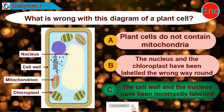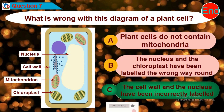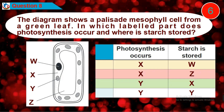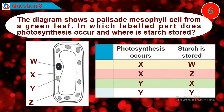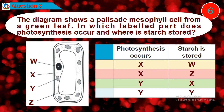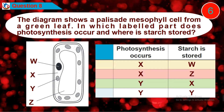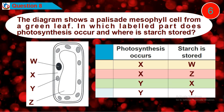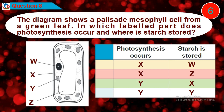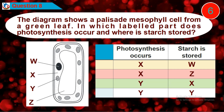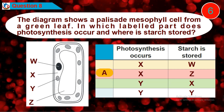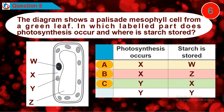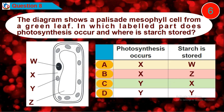Question 8: The diagram shows a palisade mesophyll cell from a green leaf. In which labeled part does photosynthesis occur and where it starts? Is it option A, B, C, or D?